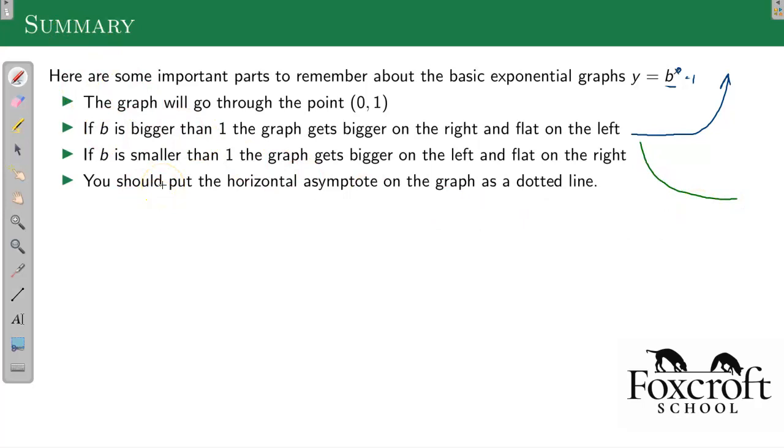And then you should, to get full credit, you put your horizontal asymptotes on your graph as a dotted line. So here I'd have a dotted line there. Here I'd have a dotted line there. And that shows me that you recognize that the graph is actually supposed to level off there and you don't have something that looks like that. Because that's wrong for exponentials. It should level off at that dotted line.